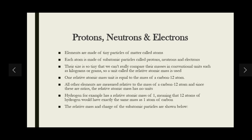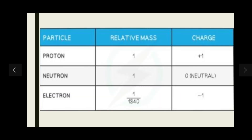The relative atomic mass and charge of the subatomic particles are shown in a table. Protons have a relative mass of one; neutrons have a relative mass of one; electrons have an almost negligible relative mass of 1/1840, so we don't consider them as having significant mass. In terms of charge: protons have a charge of +1, neutrons have a neutral charge of 0, and electrons have a charge of −1.